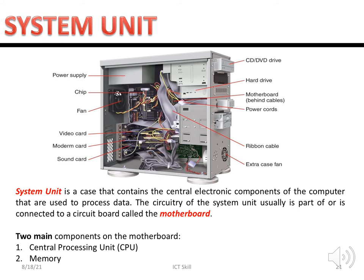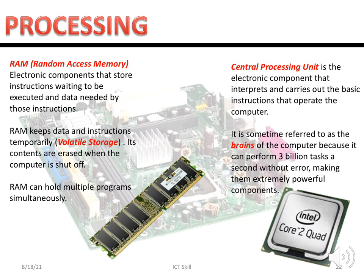The motherboard contains two main components: CPU and memory (RAM). RAM stands for random access memory — it is an electronic component that stores instructions waiting to be executed, and keeps data and instructions temporarily. While you are typing your assignment, RAM holds your data temporarily. But when your computer shuts off, the content will be erased. You can check your laptop's RAM in the system specifications — it can be 4 or 8 gigabytes.